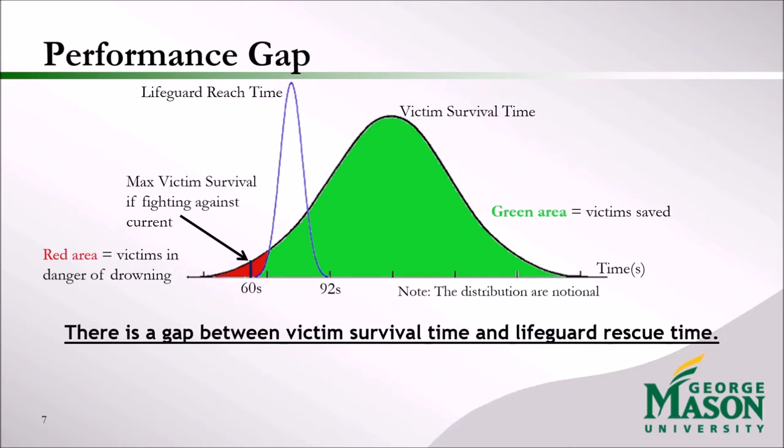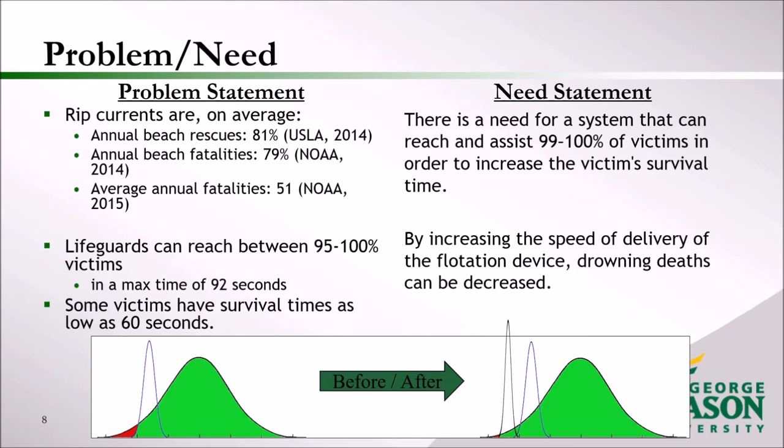The gap we've found is in time — victim survival time versus lifeguard rescue time. Some victims cannot survive long enough for the lifeguard to reach them, shown as the red area. The problem is that rip currents account for 80% of fatalities, 80% of rescues, and cause an average of 51 deaths per year. Lifeguards can reach a victim in a max of 90 seconds, but some victims cannot survive long enough — some as low as 60 seconds. Thus, there is a need for a system that can reach and assist at least 99% of victims in order to increase their survival time.